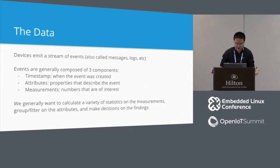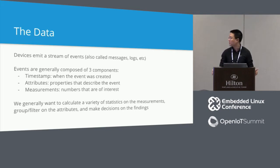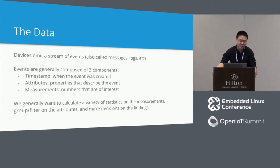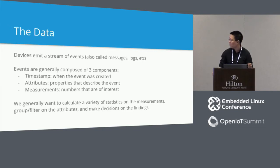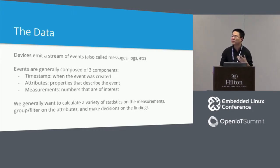With any connected device, devices generally emit a stream of events. These events are often called messages or logs, but they're really just bits of information describing what's happening at a particular period in time. When I look at events emitted by devices, I see them typically being composed of three components: a timestamp indicating when the event was created, a set of attributes describing the device or what's happening, and a set of measurements — the numbers of interest. Generally what we want to do is calculate a variety of statistics based on the measurements, group or filter on the attributes, obtain insight, and make decisions based on the findings.